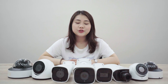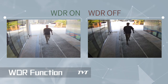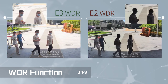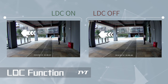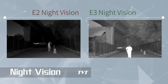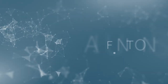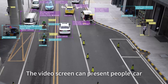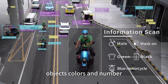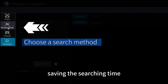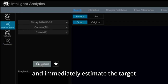I would like to emphasize the key specifications. WDR on versus WDR off — the right side shows the effect of E2. Lens distortion correction on versus off. Night vision comparison: the right one is E3, the left one is E2. Video structure: the video system can present people, car, objects, color and number. It can quickly extract tracking of the target object, saving search time and immediately locating the target. Currently, only 4K E3 supports this function.